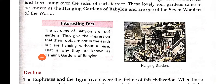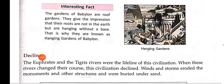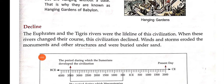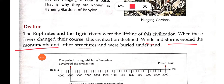These gardens gave the impression that their roots were not in the earth but were hanging without a base — that is why it became known as the Hanging Gardens of Babylon, built by Nebuchadnezzar. Regarding decline — Mesopotamian civilization was based on the Euphrates and Tigris rivers. When these rivers changed their course, the civilization began to decline. Winds and storms eroded the monuments and structures, burying them under sand.